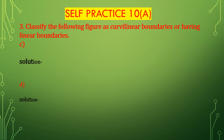Now third bit C: classify the following figure as curvilinear boundaries or having linear boundaries. First draw the given figure. This figure is a rhombus. Boundaries containing only straight lines or line segments are called linear boundaries. This boundary has only straight lines — there are four straight lines. So this is a linear boundary.